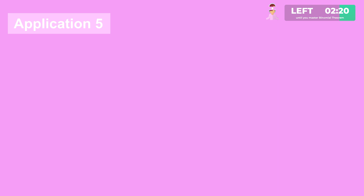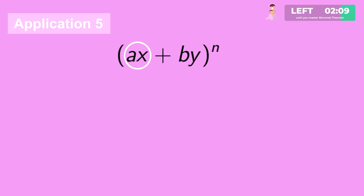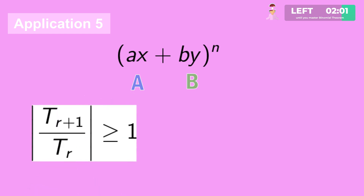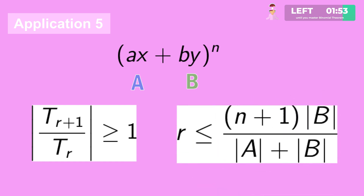The last application is finding the greatest term in a binomial expansion. For an expansion of the form (ax plus by) to the power n, treat ax as constant A and by as constant B. The condition for the greatest term is that |T(r+1) / Tr| should be greater than or equal to 1. Solving this condition gives r less than or equal to (n plus 1) times |b| upon (|a| plus |b|).